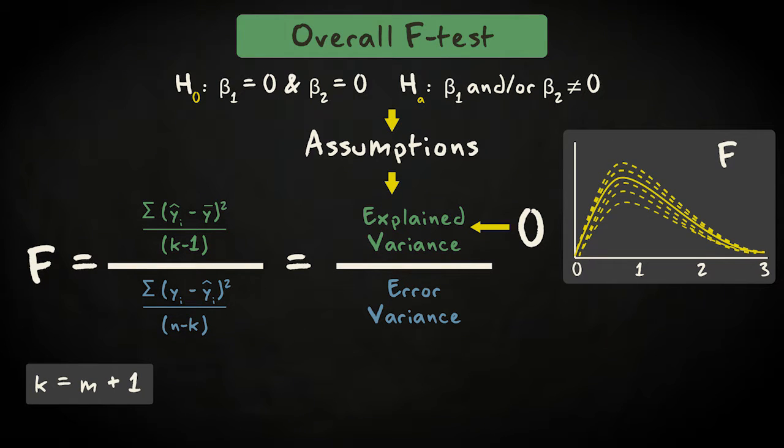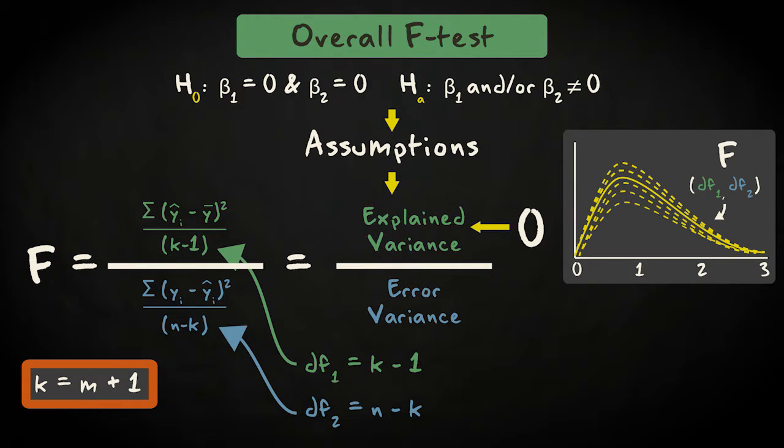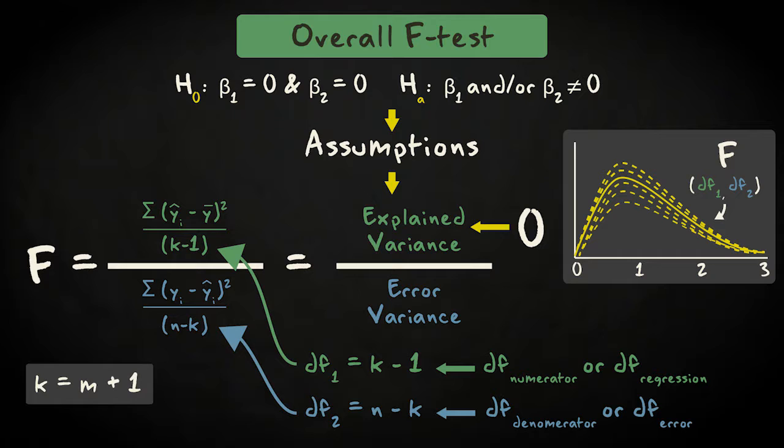The exact shape of the distribution is determined by two separate degrees of freedom. The first equals the number of parameters in the model, minus one. The second equals the number of observations, minus the number of model parameters. Again, the number of model parameters equals the number of predictors, plus one for the intercept. Notice that we used these values to turn sums of squares into mean squares earlier. This is why the first degree of freedom is often referred to as the numerator or regression degree of freedom, and the second is often called the denominator or error degree of freedom.